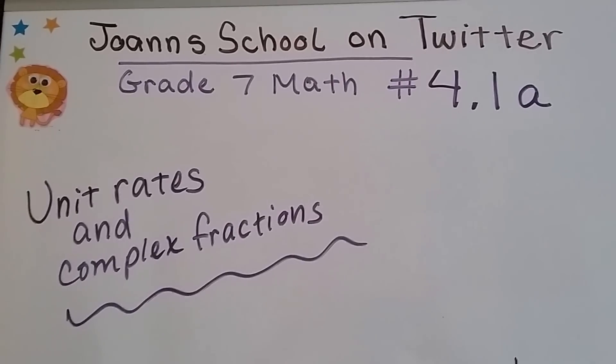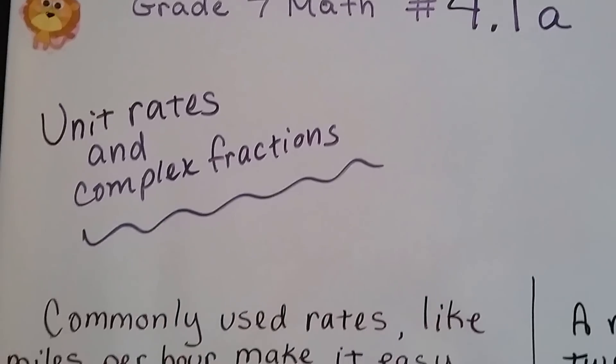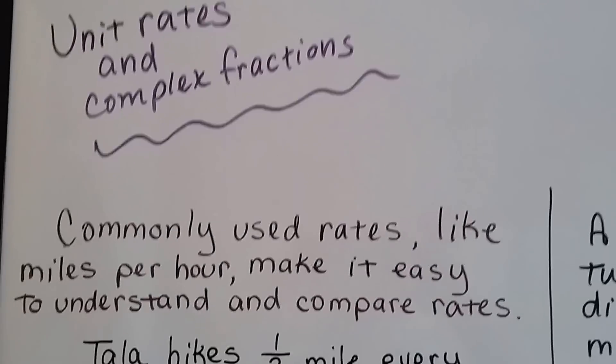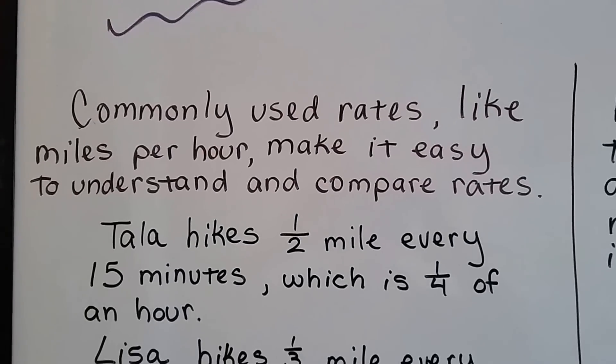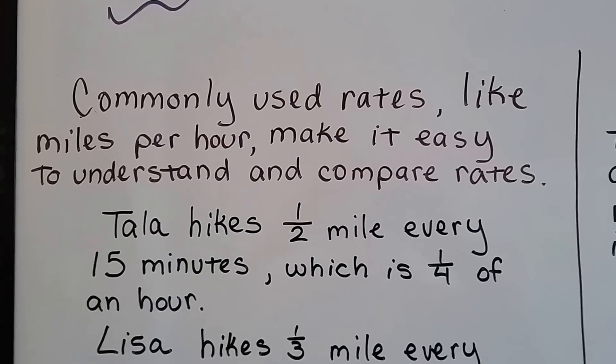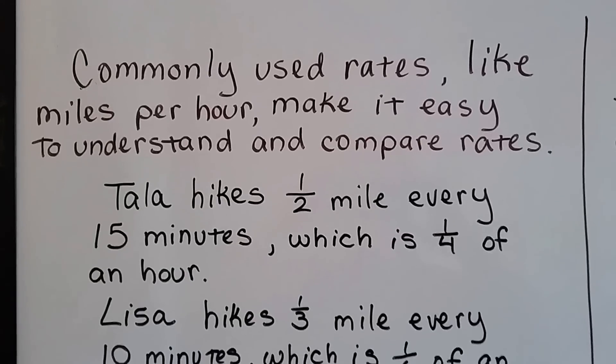Grade 7 math, number 4.1a: unit rates and complex fractions. Commonly used rates like miles per hour make it easy to understand and compare rates.